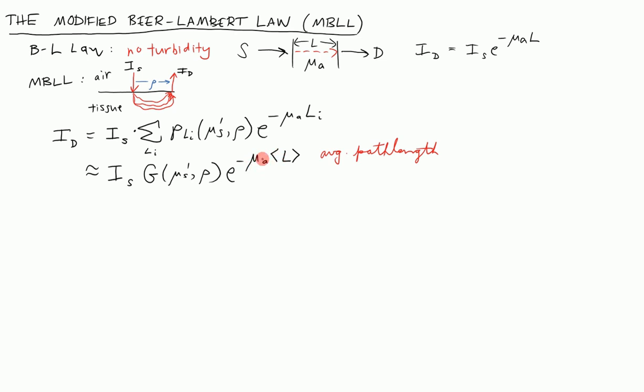Now we keep going. We're going to make another approximation. We're going to keep I_s, we're going to keep G. But we're going to say that this average value of the path length traveled is approximately able to be written by a quantity we call the differential path length factor. I'll write that out here: differential path length factor, and then multiplied by the source-detector separation.